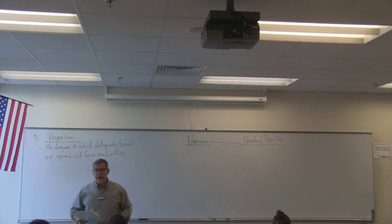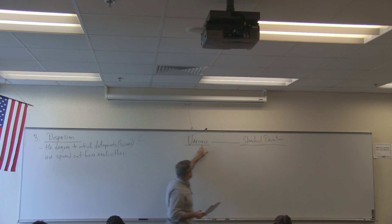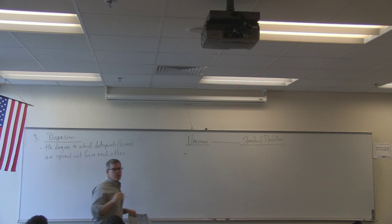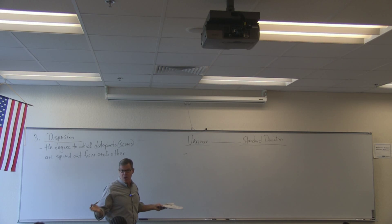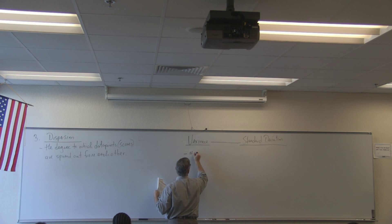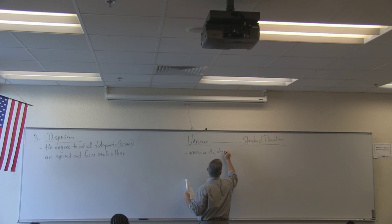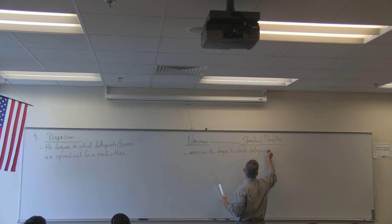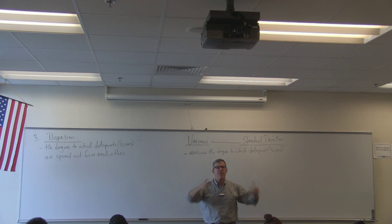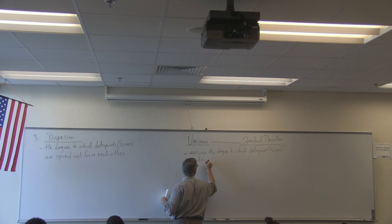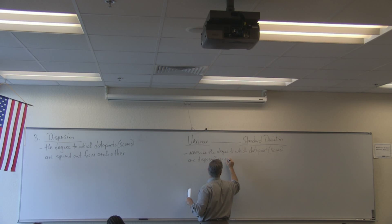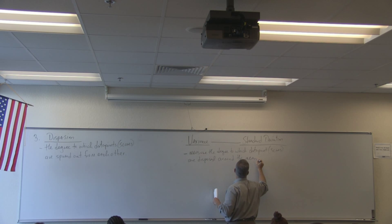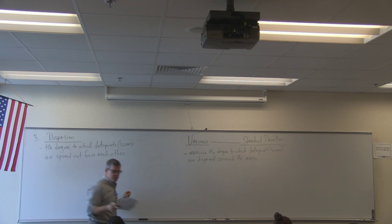What we will study in great depth are the other two measures of dispersion: variance and standard deviation. These two measures will be with us for the rest of the semester — that's how important they are. These two measures measure the degree to which our data points, also called scores, are dispersed around the mean.